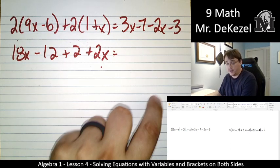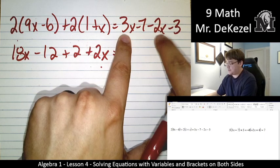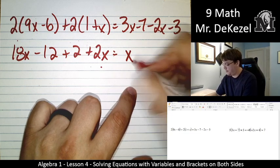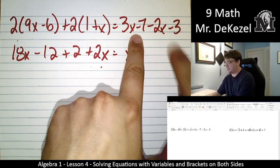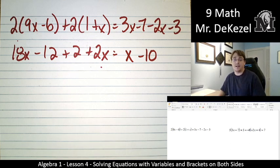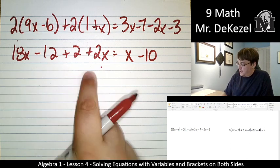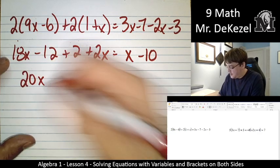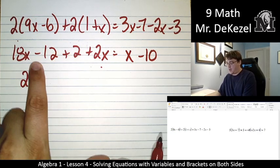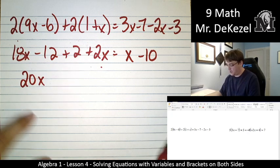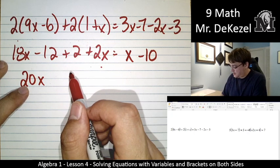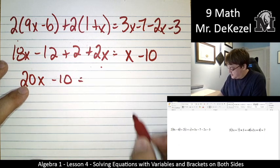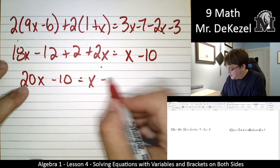We're going to combine like terms already on the right-hand side. 3x minus 2x is just x. We have the same variable, the same exponent, we can combine them. That's just x. Minus 7 minus 3, that's minus 10. Okay, we're going to combine like terms on this side. So 18x plus 2x, that's 20x. And then minus 12 plus 2, let's see, that would be minus 10. That all equals x minus 10.